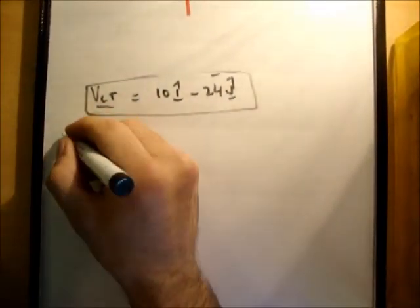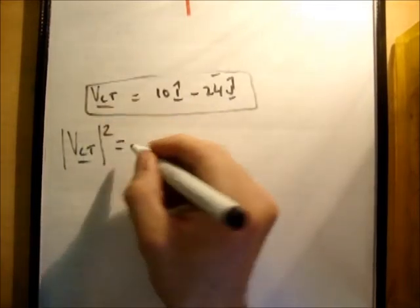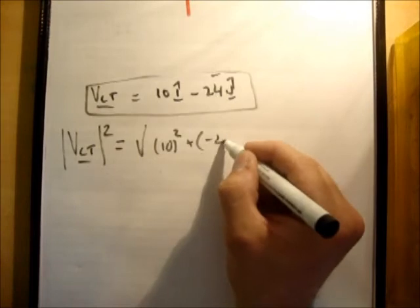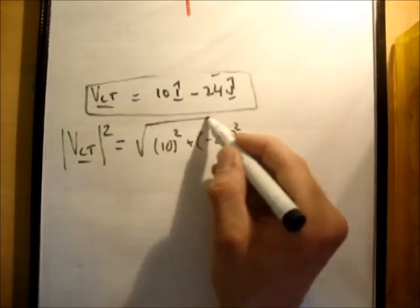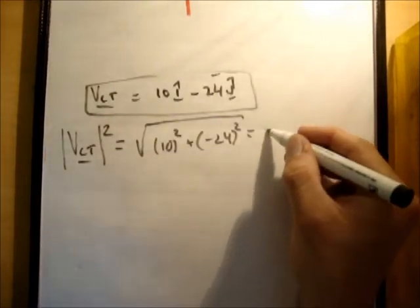So to get the magnitude of the velocity vector vct, it's squared is equal to the square root of 10 squared plus negative 24 squared. And if you just plug that in, you're going to get the square root of 676 which is equal to 26.